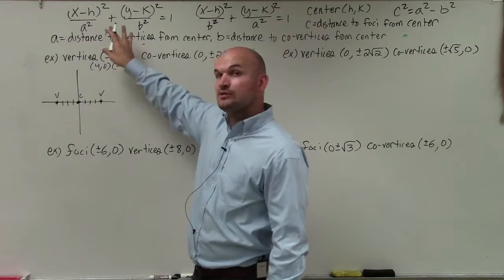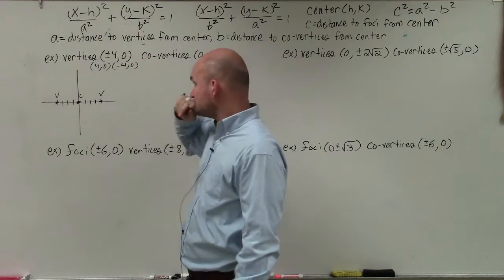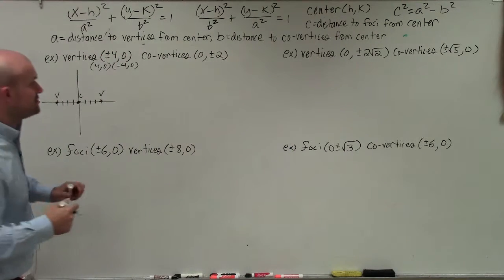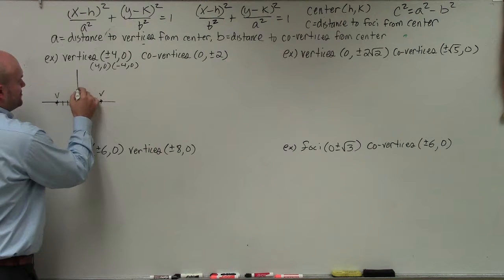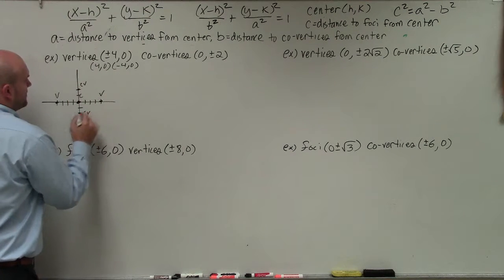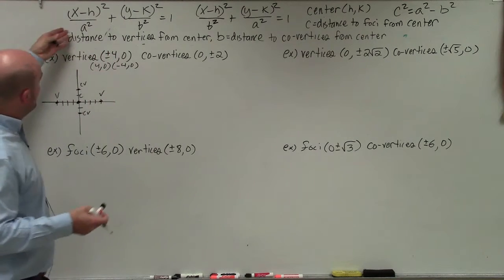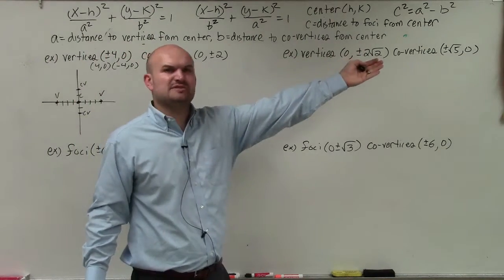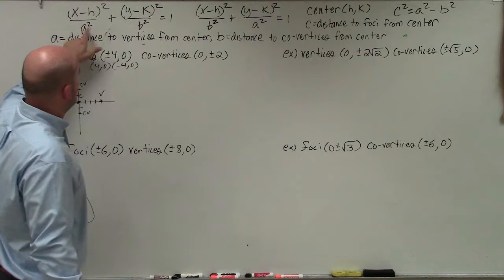So the major axis is horizontal, and therefore I'm going to use the horizontal equation — this is the equation of an ellipse with a horizontal major axis. The next thing we want to do is plot the other information: we have co-vertices at plus or minus 2. Now we need to figure out what a and b are, since we know h and k represent our center at the origin.